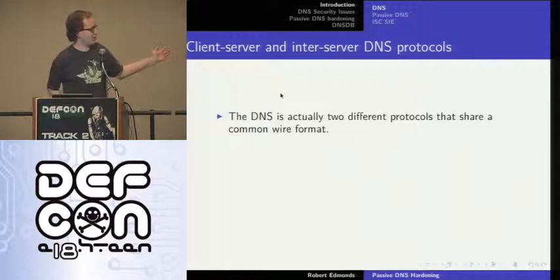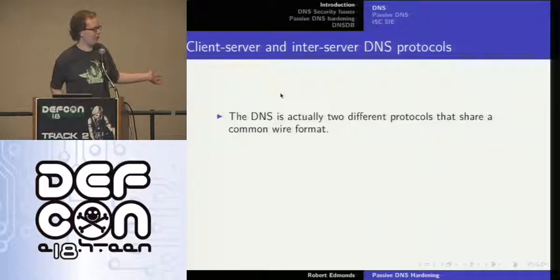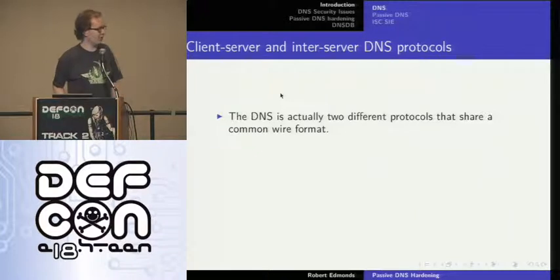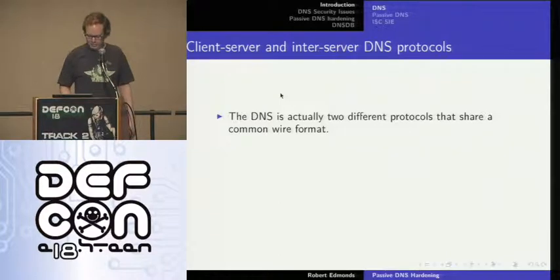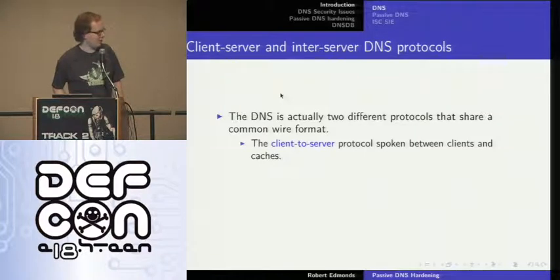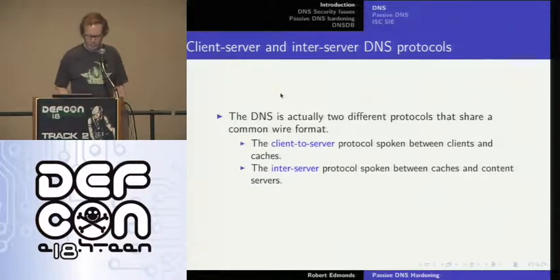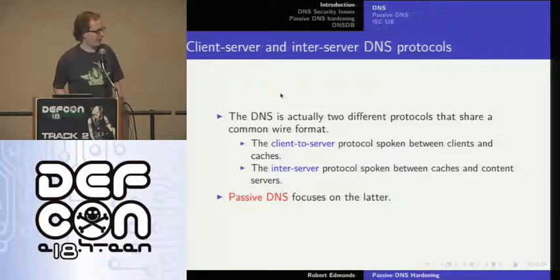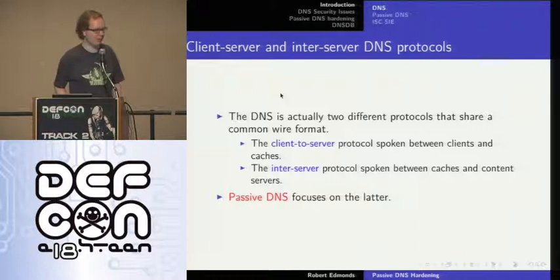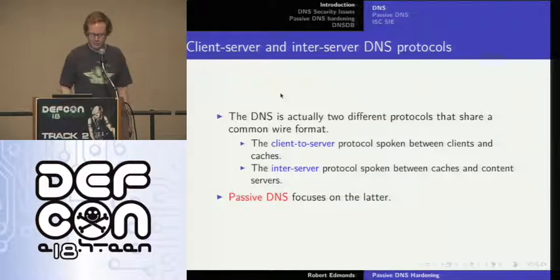We have this natural choke point where we can insert a monitoring application. The DNS has two different protocols: one that the client speaks to the cache, and one that the cache speaks to the content name servers. These have fairly different semantics, but they use the same wire protocol. Passive DNS focuses on the latter, because we don't want to see client queries or give the impression that we are spying on people. What we want to do is gather intelligence about the domain name system rather than about the clients requesting that information.